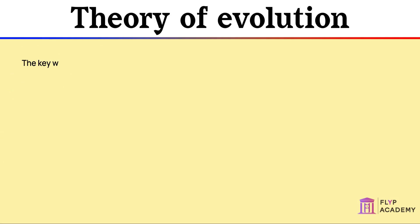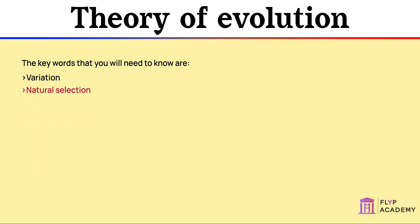The key words that you will need to know are: Variation, Natural Selection, Generation, Controversy, and Inheritance.